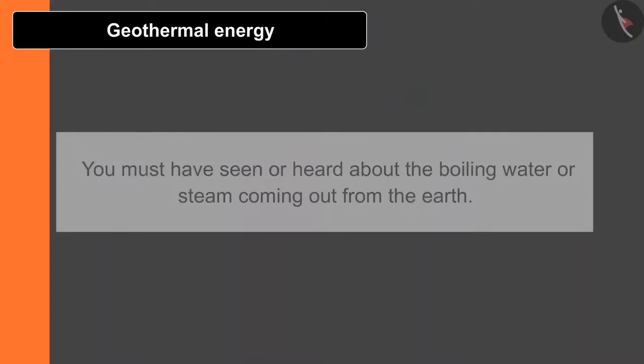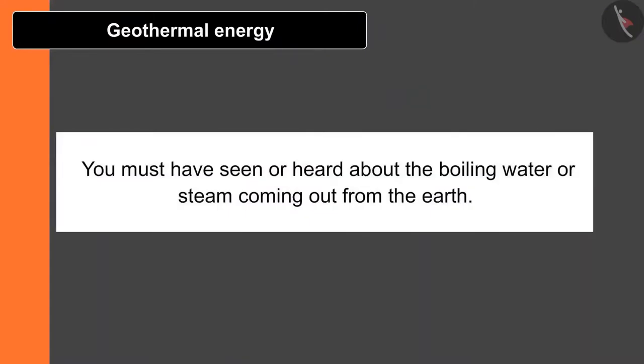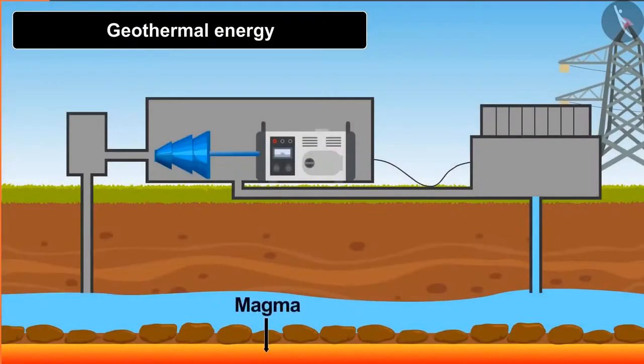Third one is geothermal energy. You must have seen or heard about deep boiling water or steam coming out of the earth. This water comes out because of the temperature difference. Let's go a bit deeper to understand this concept. Hot magma is present in the core of the earth. Due to the motion of tectonic plates, it heats up the rocks just above it. When the ground water convert into the steam after coming in contact with these rocks, it starts moving towards the earth surface.